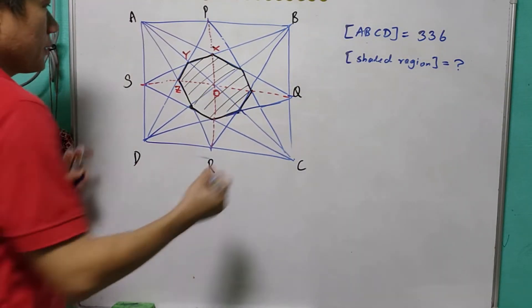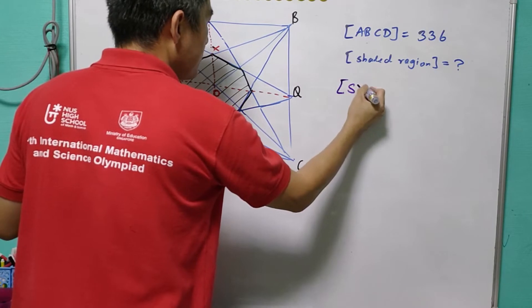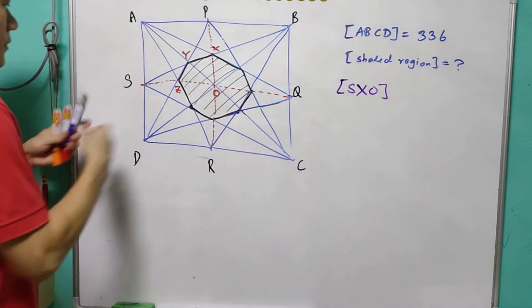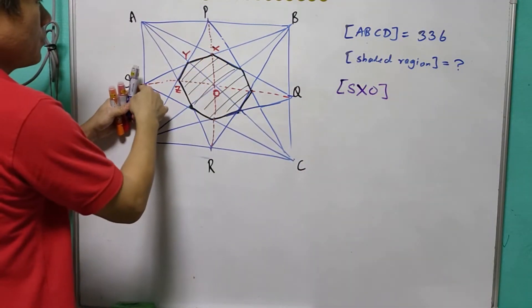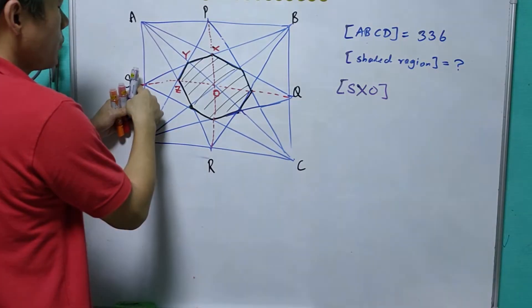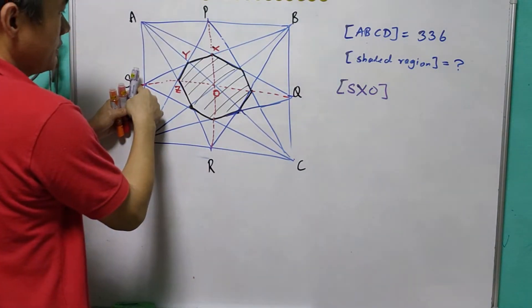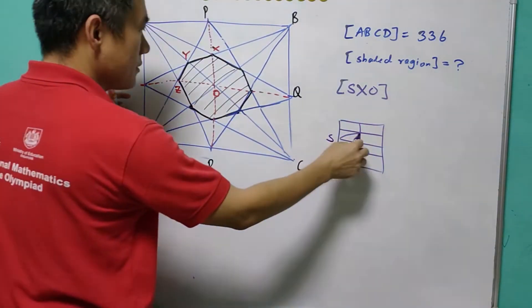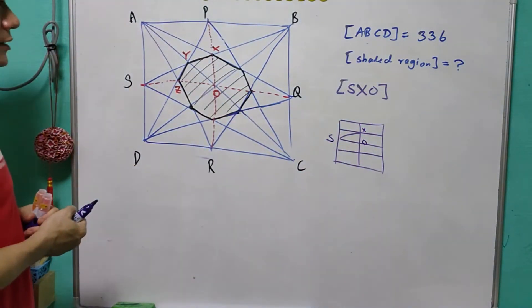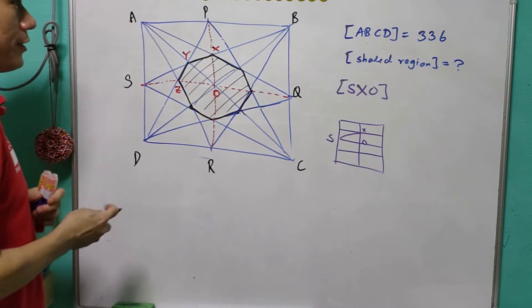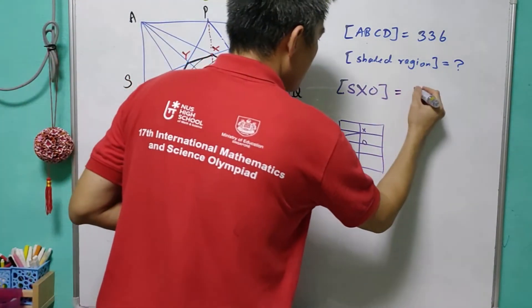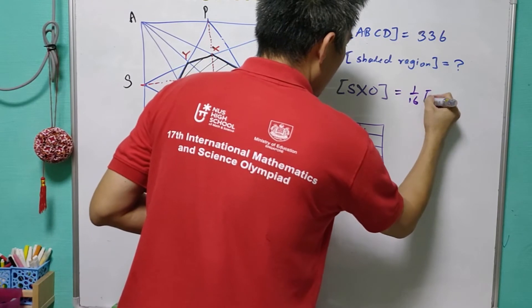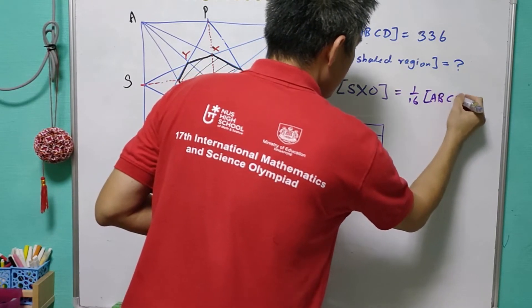Now, this is not difficult to see that the area of SXO would be actually equal to 1 over 16 of the area ABCD. Because it is simply 1 over 16 of the area of ABCD.